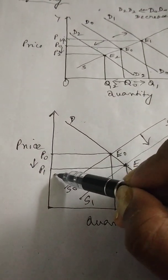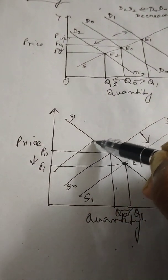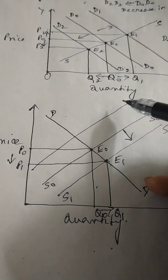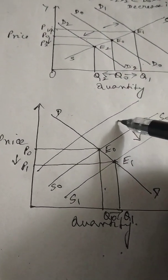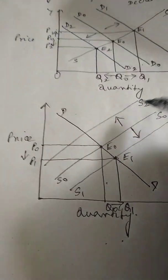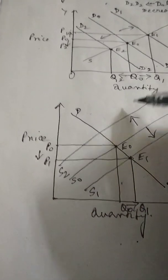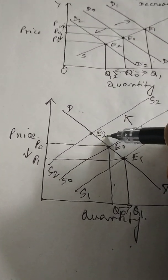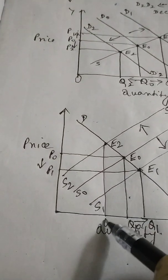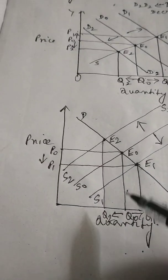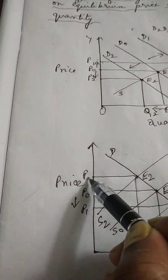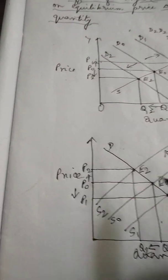Now suppose the price of inputs increases, so cost of production will increase and supply will fall. The supply curve shifts to the left — new supply curve say S2, S2. New equilibrium point E2.